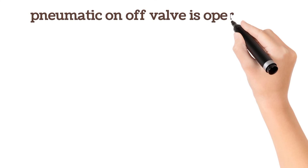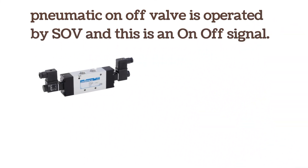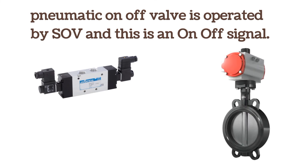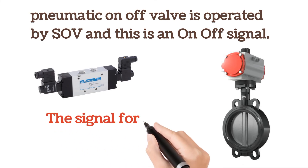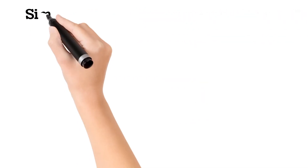A pneumatic ON/OFF valve is operated by a solenoid valve (SOV), and this is an ON/OFF signal. SOVs are used to operate butterfly valves and ball valves. The signal for the SOV is a Digital Output (DO) signal — it is a controlling signal, and since it is an ON/OFF signal, it is a digital signal. This is straightforward to understand.